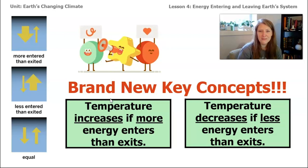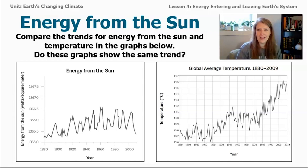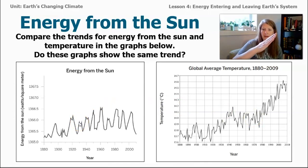In the SIM, we noticed that increasing the amount of sunlight allows more energy to come into Earth's system. So is it possible that an increase in energy from the sun could be the cause of the most recent climate change? We do have data of the amount of energy coming from the sun over the same time period as our global average temperature records. If we look at that graph, there are a lot of fluctuations, but it's not the same trend — we would expect both graphs to be going up if the trend were the same. So we can rule out the idea that energy from the sun is causing the most recent climate change.